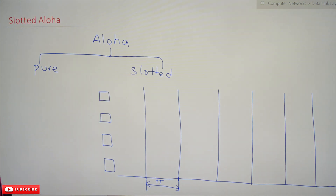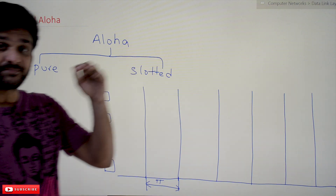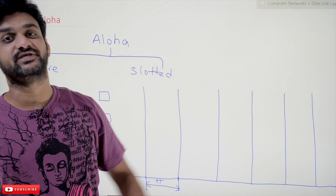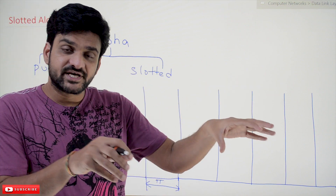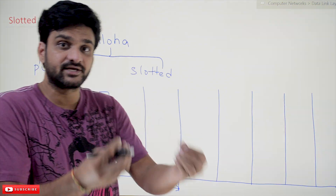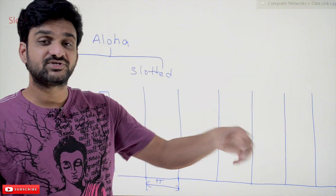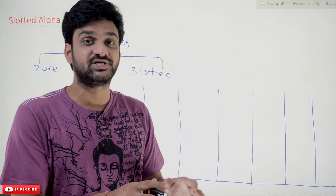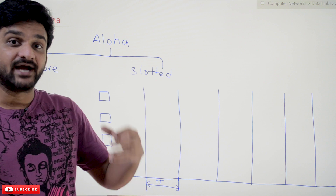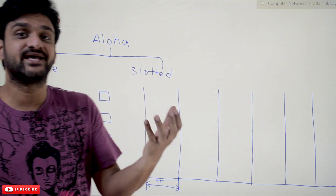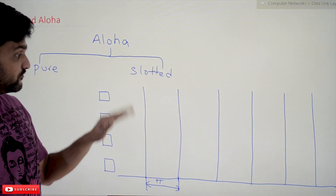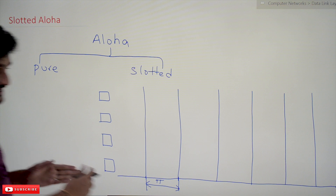Now, what is Slotted Aloha? In Pure Aloha, whenever a system has data, it will transmit without any concern about the other systems. They just send the data, so there is a possibility of a greater amount of collision and retransmissions are very high. The efficiency of the Pure Aloha system is 18%, which is very less.